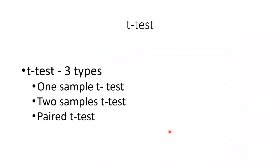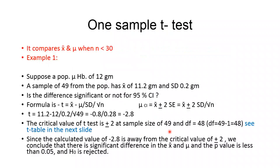There are three types of t-test we will discuss: one-sample t-test, two-sample t-test, and paired t-test. For the one-sample t-test, it compares the sample mean to the population mean. The condition for using it is when the sample size is less than 30.